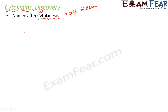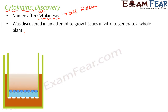Cytokinins were discovered when scientists were trying to grow tissues in vitro to generate a whole plant, but that was not becoming possible. They tried many different things — they added all the minerals and everything. Somehow they could grow some tissues, but those tissues lasted only for some time and they finally could not get a plant. The tissues had to survive for a longer time to actually give rise to a plant, but that never happened.